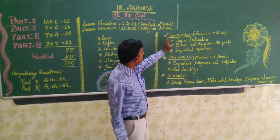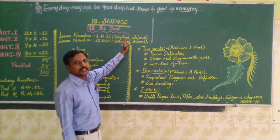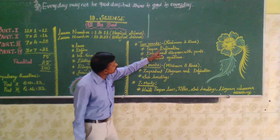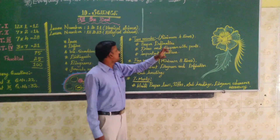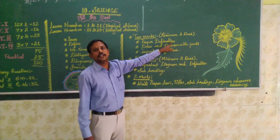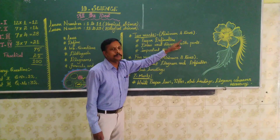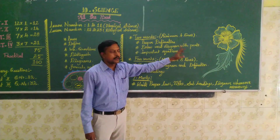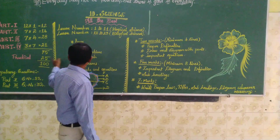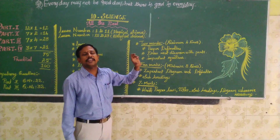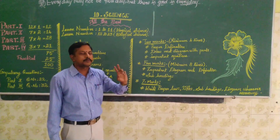So what are the 2-marks questions you have to study? Minimum 4 lines — you must write at least 4 lines. Proper definitions are very important. Draw the diagram with parts. For important questions, 50% of marks will come from 2 questions, and 25% of marks will come from other important questions, so those we also have to study.